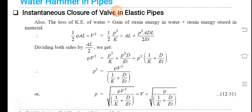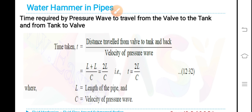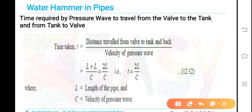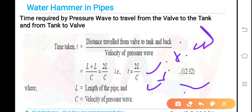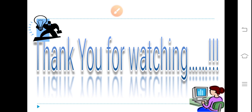The time required for the pressure wave to travel from the valve to the tank and back is: t = (L + L)/c = 2L/c, where L is the length of the pipe and c is the velocity of the pressure wave. When the valve closure time equals 2L/c, this is known as the critical time. Thank you for watching; we will continue in the next class.